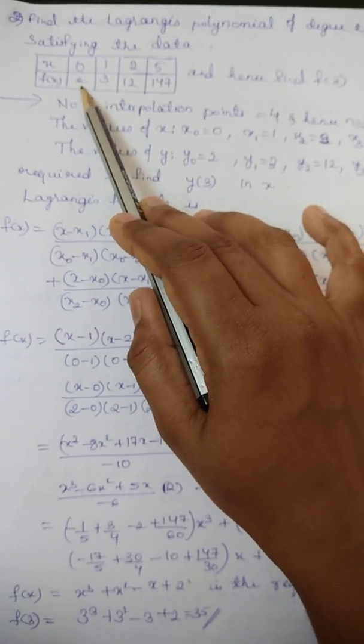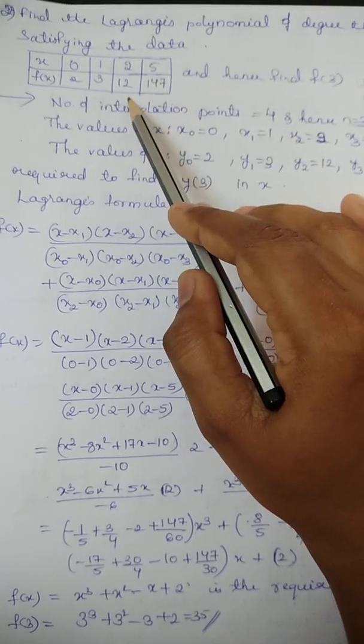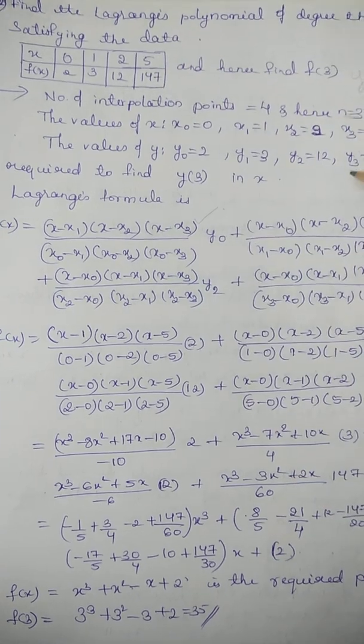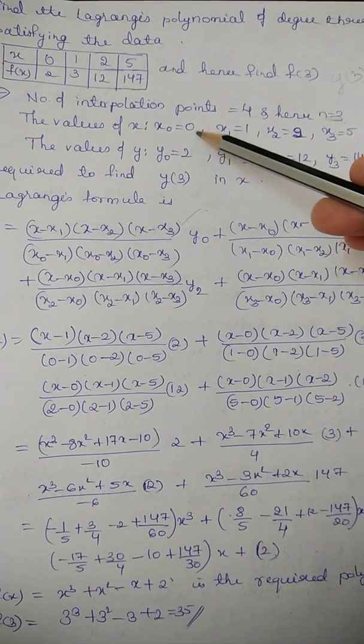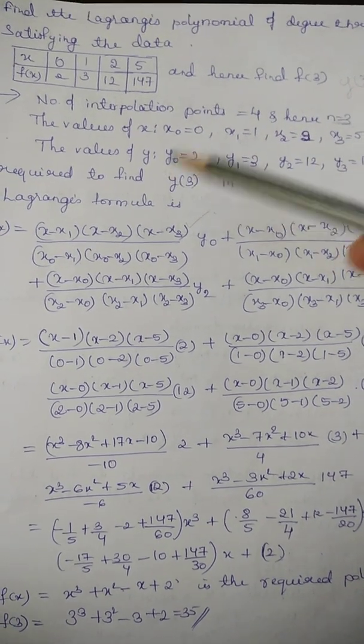Then y0 is 2, x1 is 1, y1 is 3, x2 is 2, y2 is 12, x3 is 5, y3 is 147. So I have written here. See, x0 is 0, x1 is 1, x2 is 2, x3 is 5. Similarly, y.